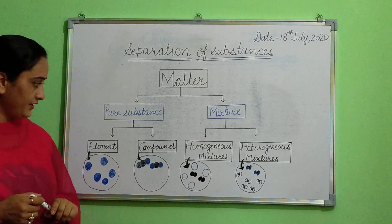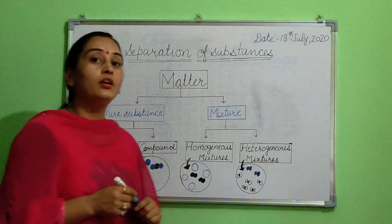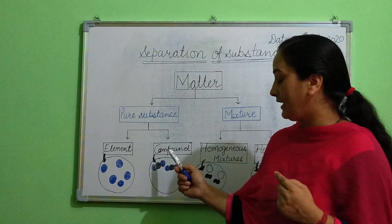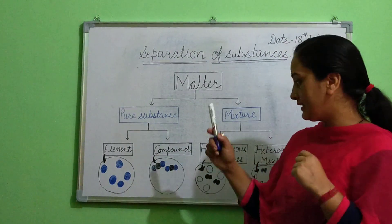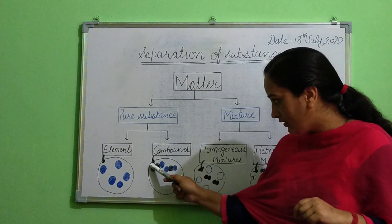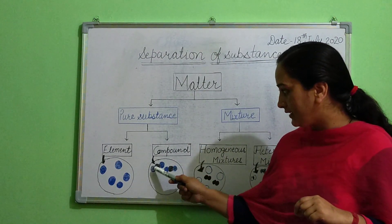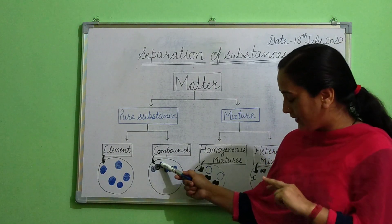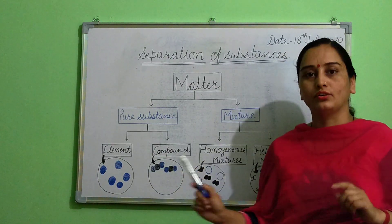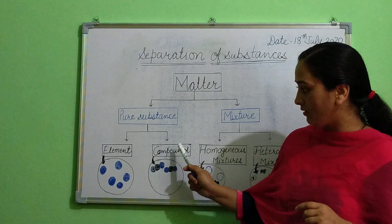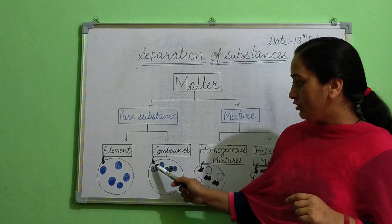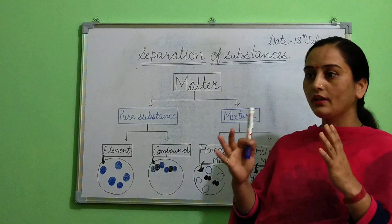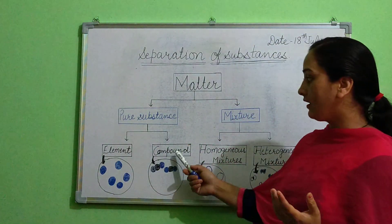Hydrogen atoms are present there. And in a compound, for example, water — water has two types of particles, that is hydrogen and oxygen. Here the blue color represents hydrogen and the black color represents oxygen. Two hydrogen atoms combine with one oxygen atom. So in a compound, more than two types of atoms combine together — hence it is a compound.